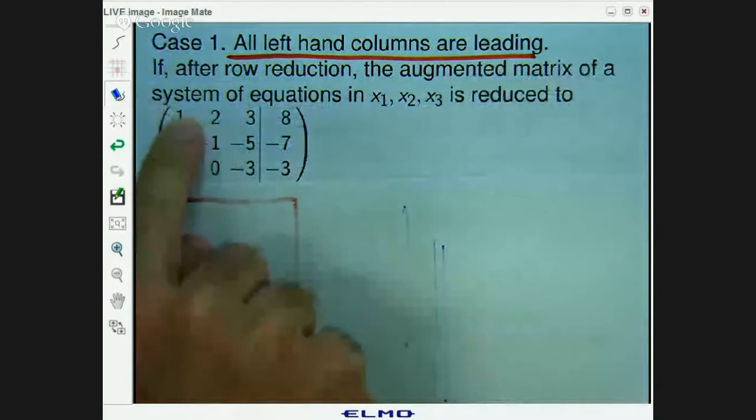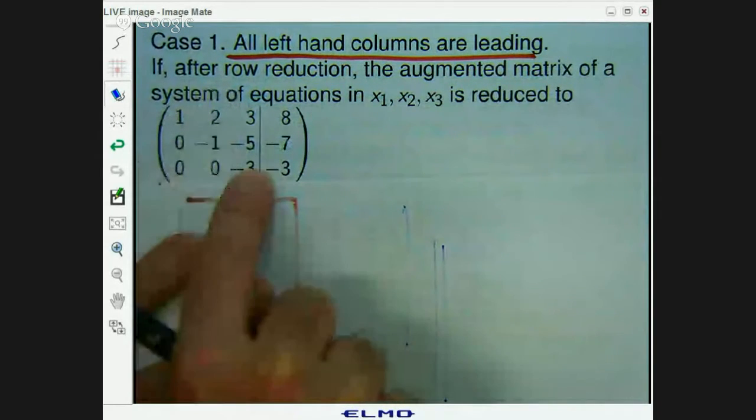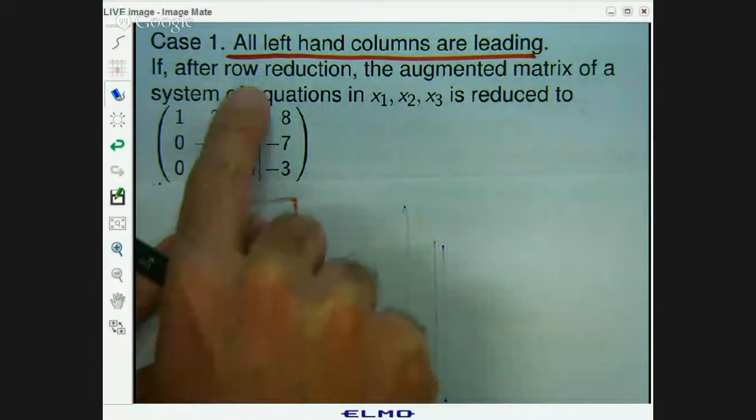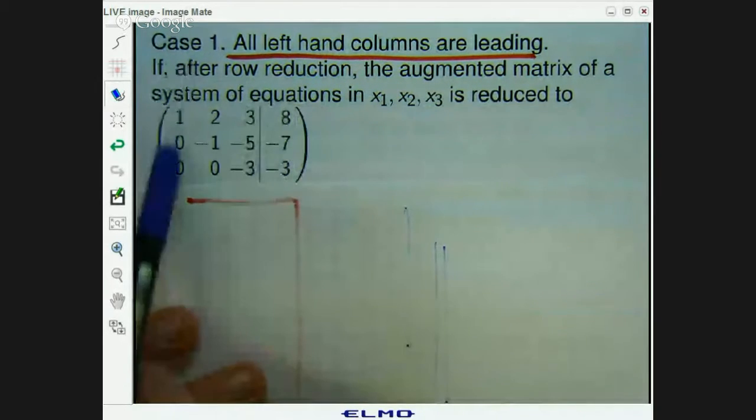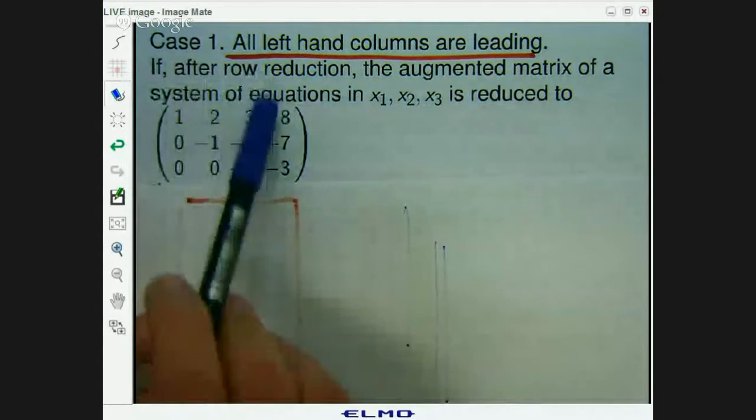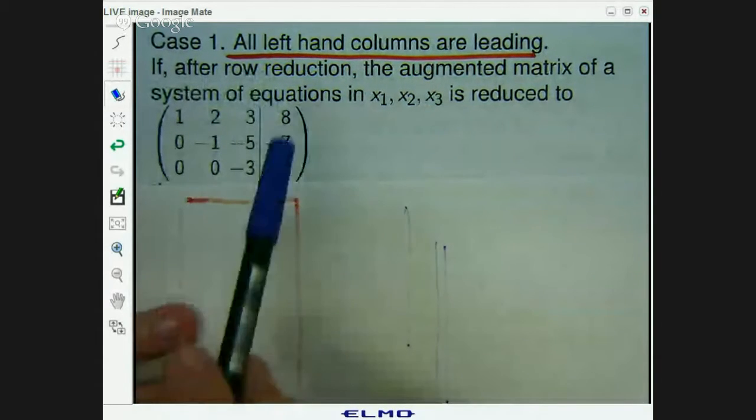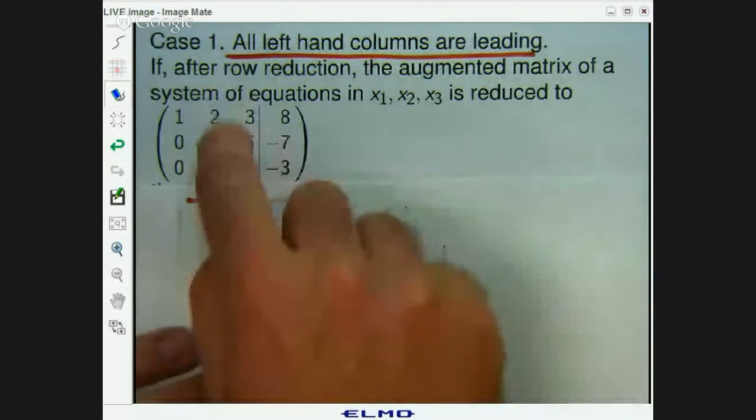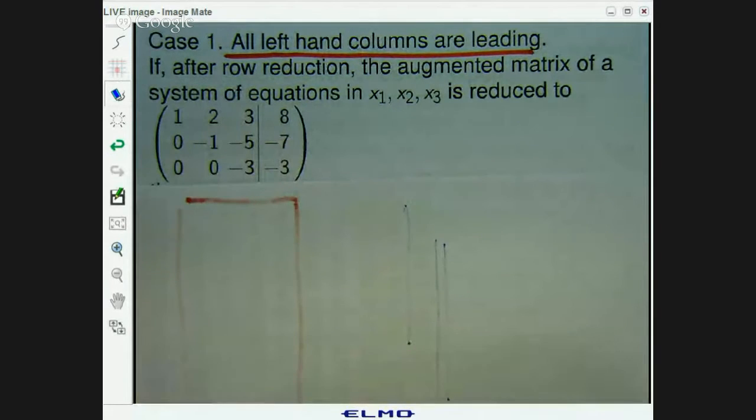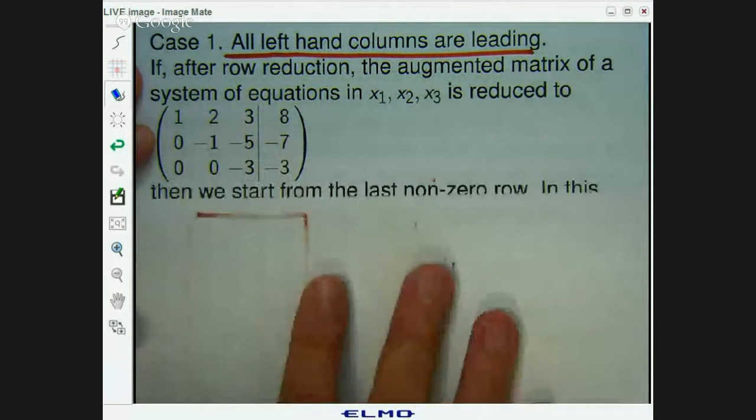So that's the first entry of row one, that's in column one, that's the first entry of row two, that's in column two, that's the first entry of row three, which is in column three. So all the left-hand columns in this matrix, this augmented matrix, are leading. So let's say we come up with this form after we've done some row reductions.